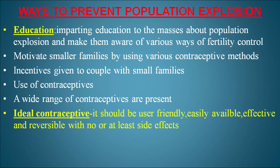To stop the growing population, the first method is providing education — imparting knowledge about population explosion and making people aware of fertility control. Motivating smaller families using various contraceptive methods is important. Incentives should be given to couples with small families. An ideal contraceptive should be user-friendly, easily available, effective, reversible, and with no or minimal side effects.